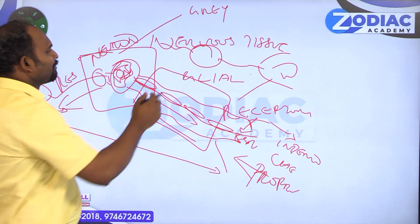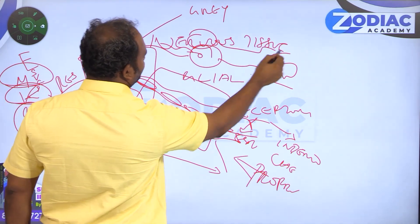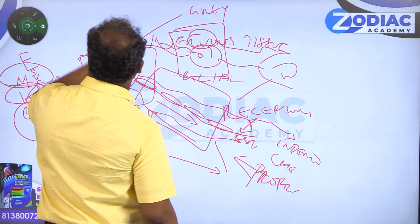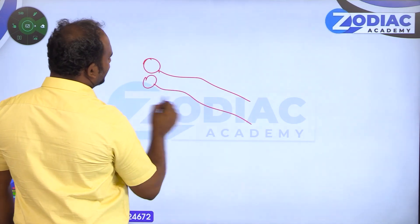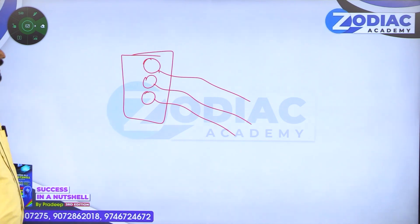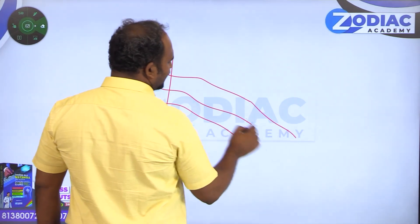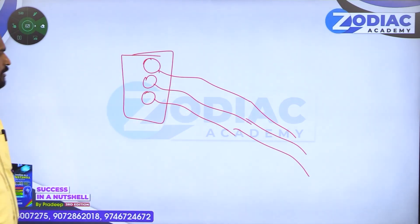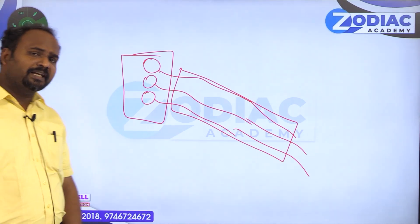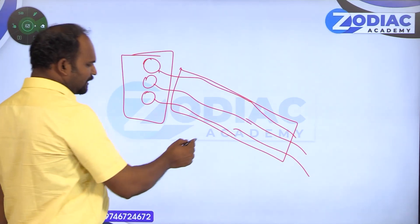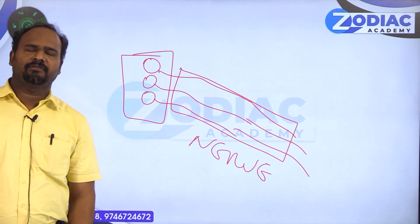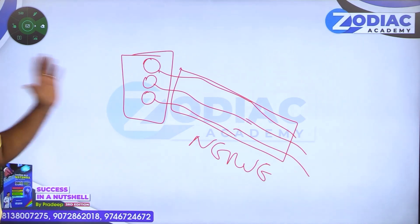Classification based on presence in ganglia: the aggregation of cell bodies in the central nervous system is called nuclei, while the same aggregation in the peripheral nervous system is called ganglia. Similarly, axonic fibers in the central nervous system form a tract, and axonic fibers in the peripheral nervous system form a nerve.